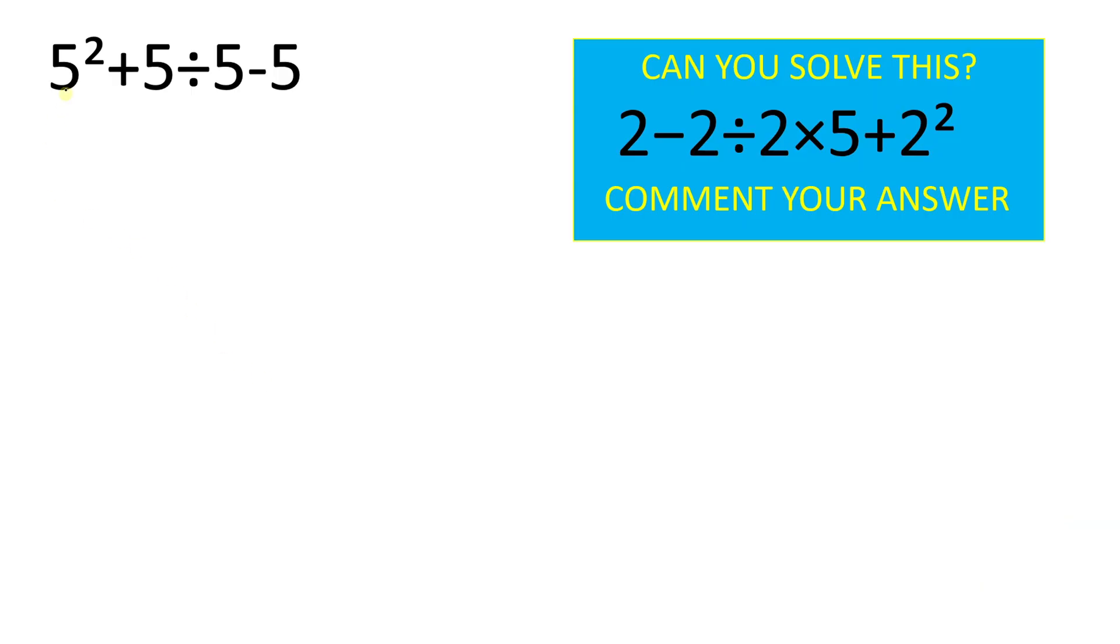Time's up. We have 5 to the power of 2 plus 5 divided by 5 minus 5. We will solve with the help of order of operation. And if you have already solved this question, then try to solve the second question.